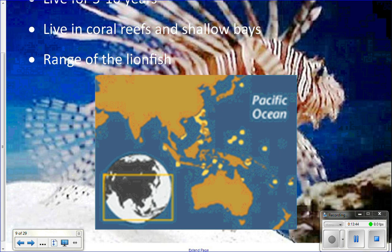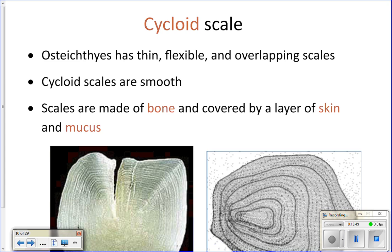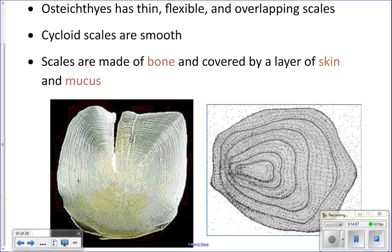Scales on bony fish are called cycloid scales. There's also ctenoid scales that look similar but have small protrusions on one side. These scales are made of bone, on the outside of the body, arranged in an overlapping pattern like tiles on a roof. Over the scales they have a layer of skin and also mucus — that's why fish are so slippery. The mucus protects them from bacteria. When you touch a fish you wipe off some of that mucus and expose them to bacteria, making them sick. You can count the rings on the scales to tell how old the fish is — just like a tree trunk.